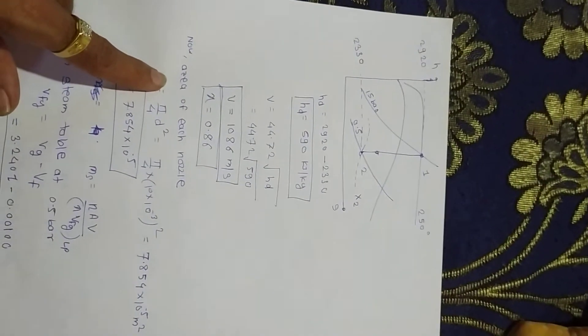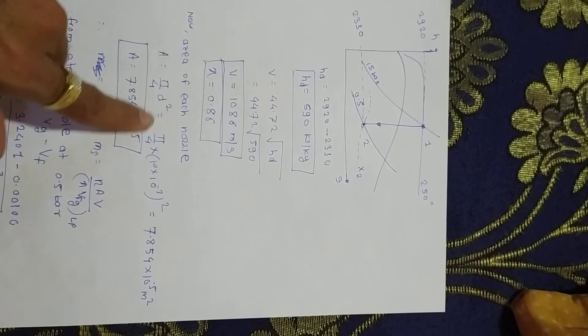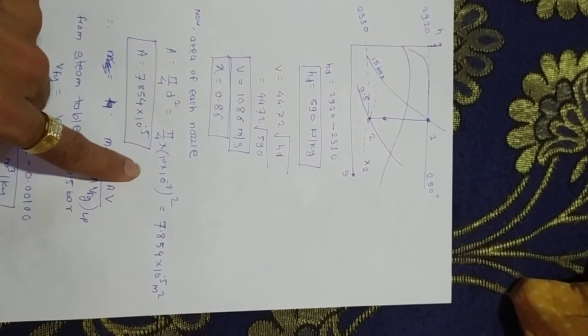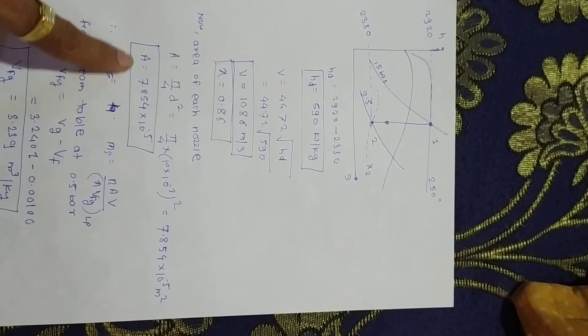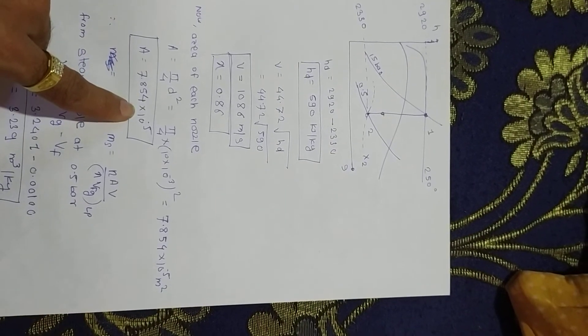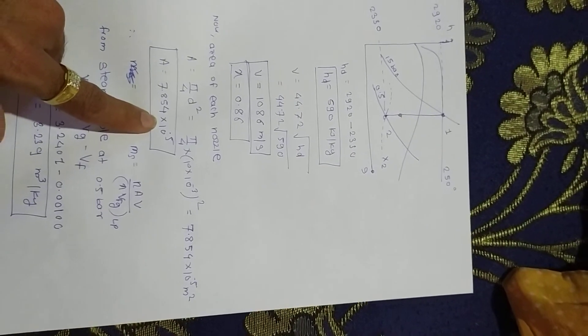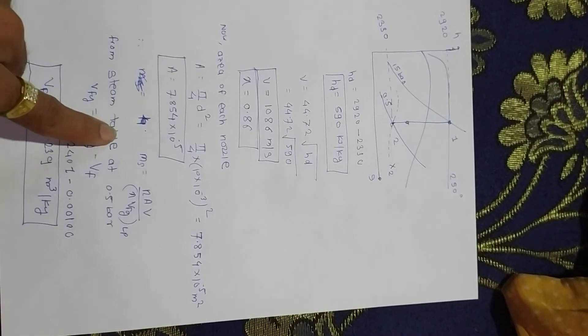Now area of each nozzle: pi by 4 D squared, where D is given in meters. Area of each nozzle is around 7.854 times 10 to the minus 5 meter squared.